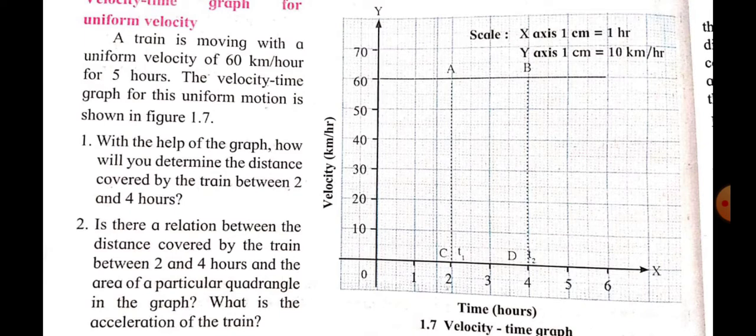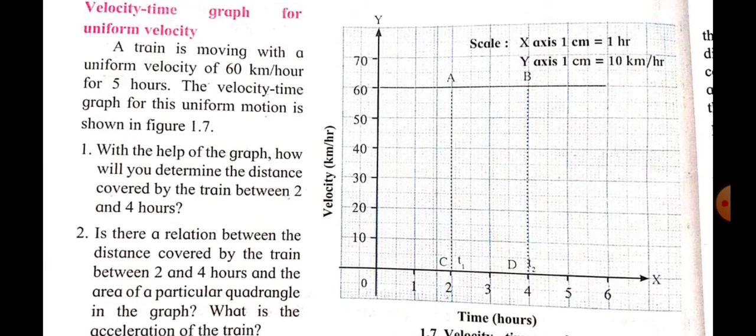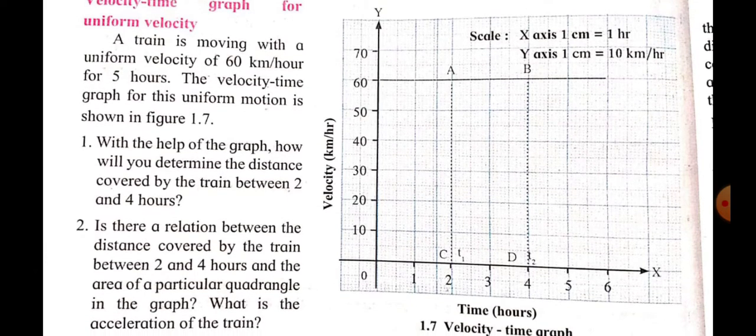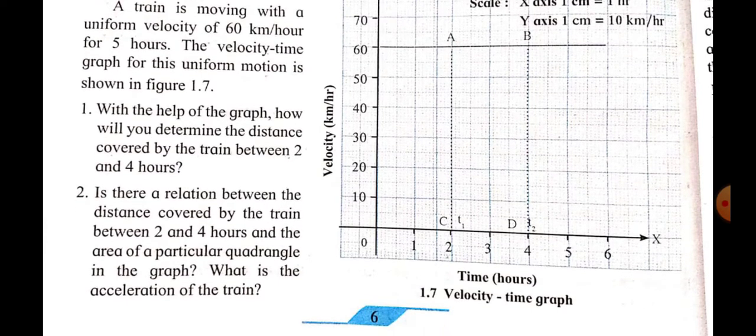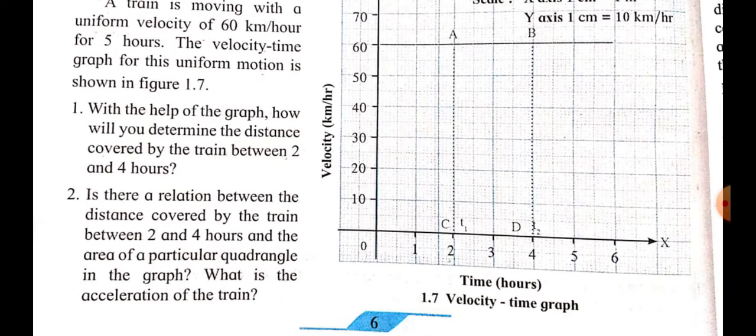In figure 1.7 we can see the velocity versus time graph — the train is moving at 60 kilometers per hour for 5 hours. The first question is: with the help of the graph, how will you determine the distance covered by the train between 2 and 4 hours?